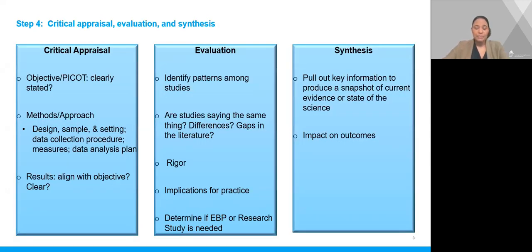Once we have our literature, we can critically appraise it, evaluate it, and synthesize it. Critically appraising the literature will determine the clarity and rigor of the study — for example, is an objective or PICO question clearly stated? Are the methods and approach section detailed? Are the results clear and do they align with the research question? To evaluate the literature, we look for patterns among the studies: are there randomized controlled trials, systematic reviews, and meta-analyses, or are there qualitative and descriptive studies? This tells you how robust the evidence is and whether you can conduct an EBP project or if another research study is needed.